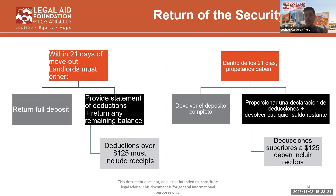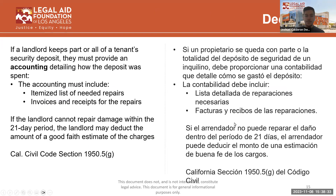For example, if you paid $1,000 for your security deposit and only got $900 back, that $100 deduction would not require receipts. If the landlord keeps part or all of the deposit, they must provide an accounting detailing how the deposit was spent. The accounting must include an itemized list of needed repairs and the invoices and receipts for those repairs. If the landlord cannot repair damage within the 21-day period, the landlord may deduct the amount of a good-faith estimate of the charges.